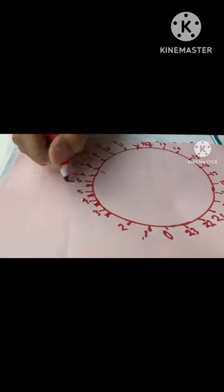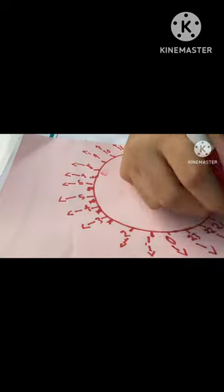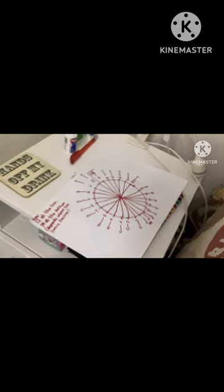You should also add some arrows to show where the sun's position is. And finally, this is what the clock looks like.